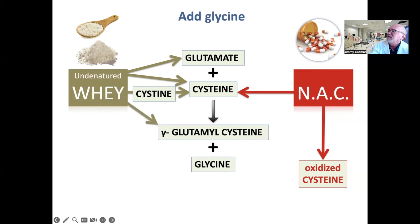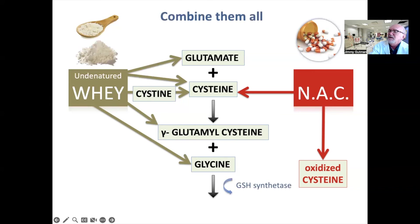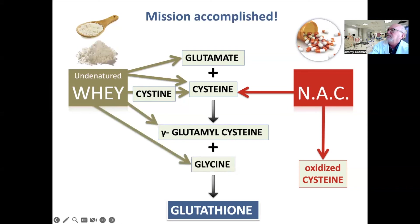Glycine must also be added. Whey protein will provide glycine, but NAC won't — another key difference. Finally, the enzyme glutathione synthetase is used, and the final step is the production of glutathione. So you see, whey protein isolate fills in many more of these steps than does NAC.